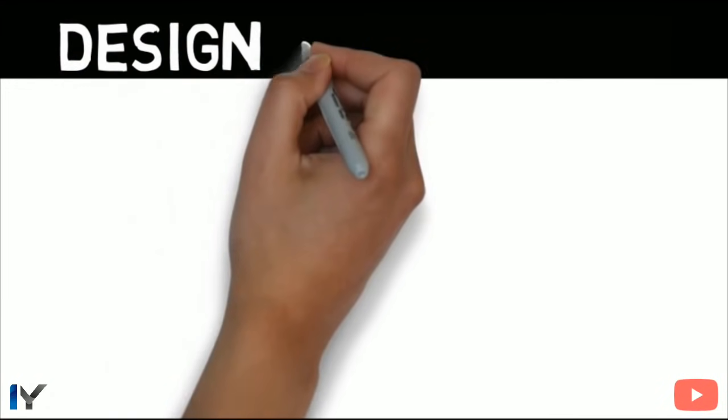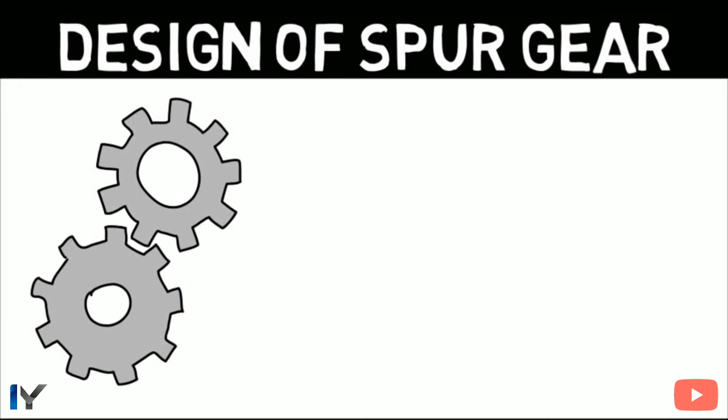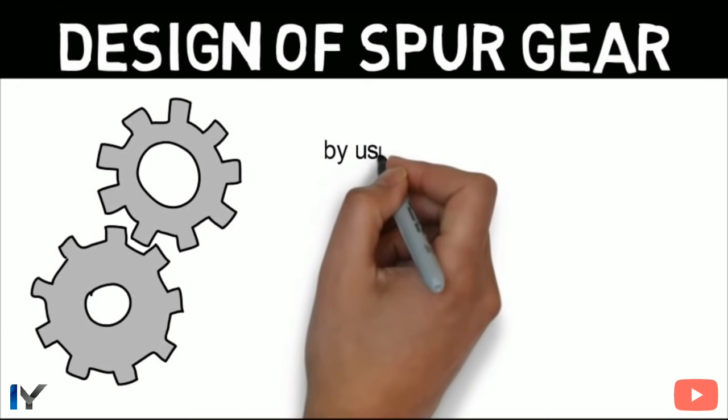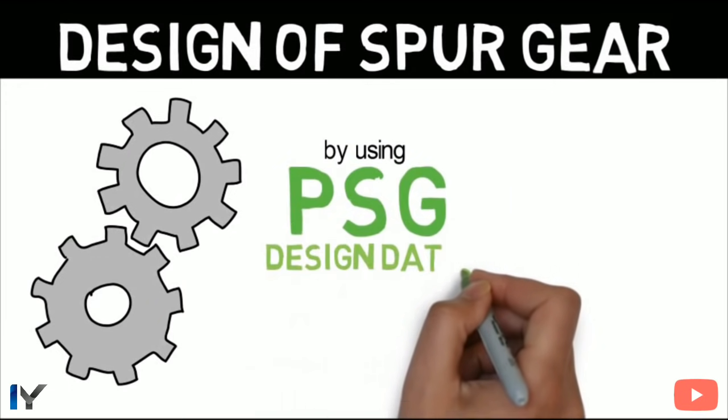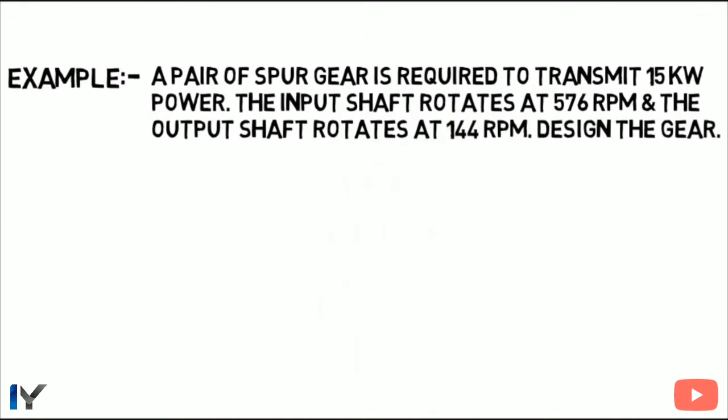Hello friends. In this video we will see the complete procedure of design of spur gear step by step in a very easy manner by using the PSG design data book. The question is: a pair of spur gear is required to transmit 15 kW power. The input shaft rotates at 576 rpm and the output shaft rotates at 144 rpm. Design the gear.